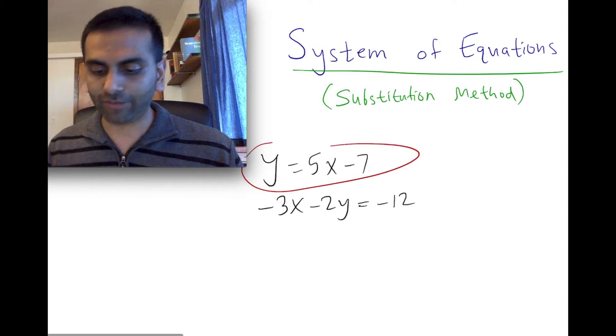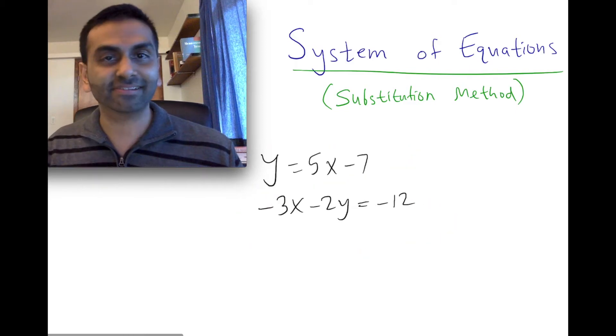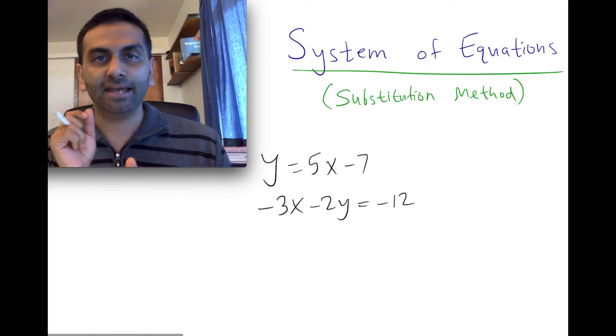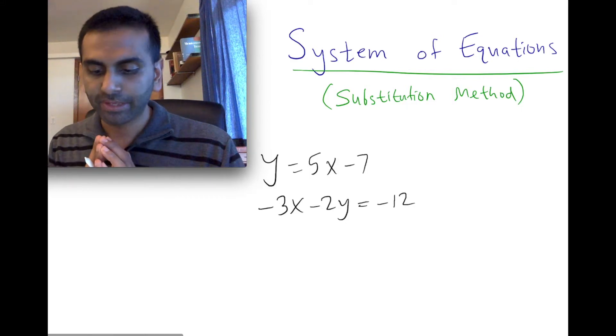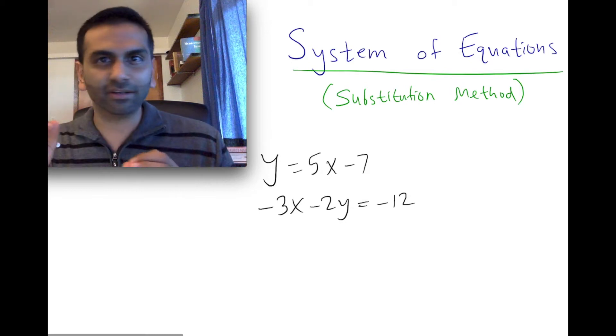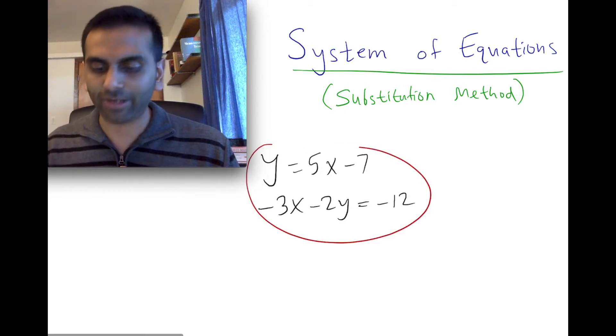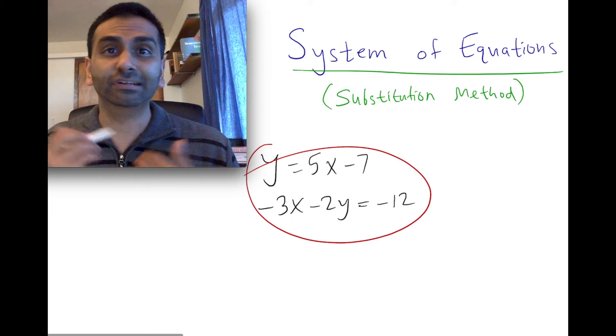If you have more than one equation, that's a system, and you're asked to solve for it. You're basically asked to solve for the x and y value that makes that happen. So instead of a single equation where you solve for a single variable, now you have two equations and you have to solve for two variables.